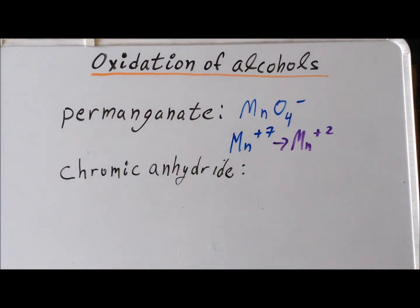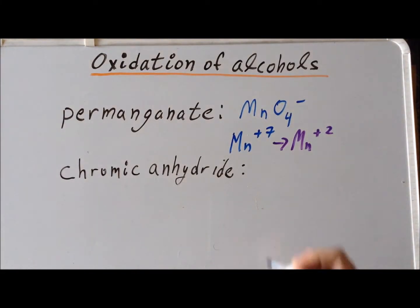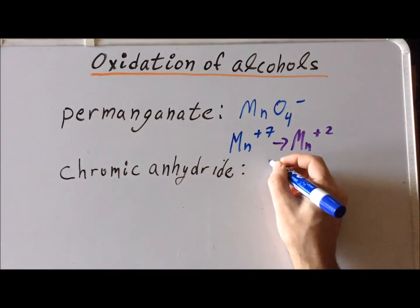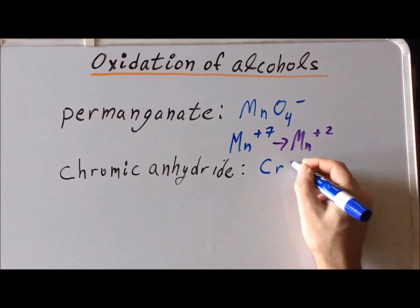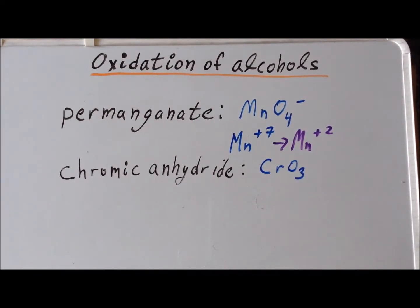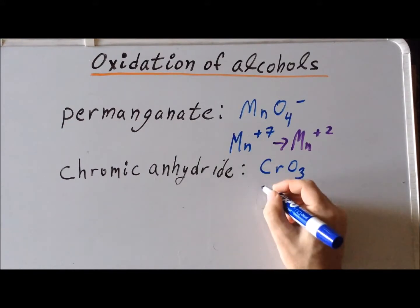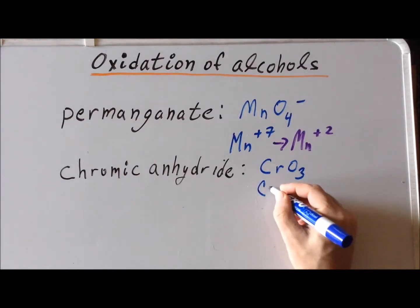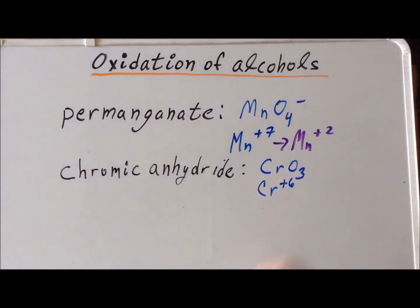Several important oxidizing agents for the oxidation of alcohols involve chromium. One of these is chromic anhydride, sometimes called chromium trioxide. In this particular species, chromium has a plus 6 oxidation number.